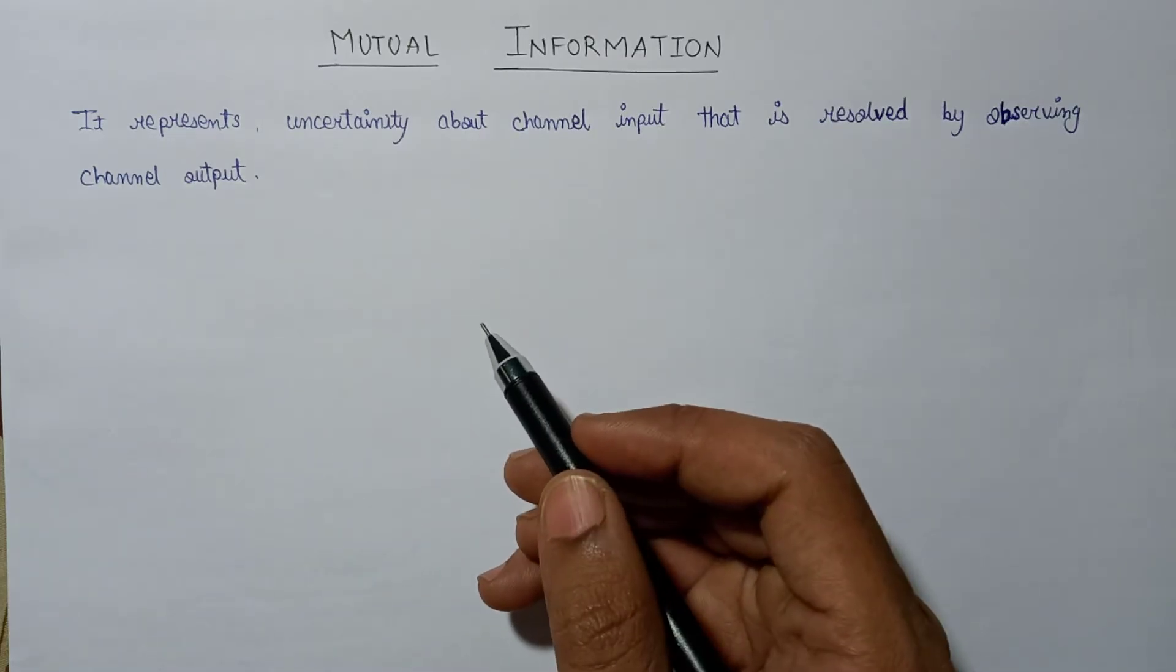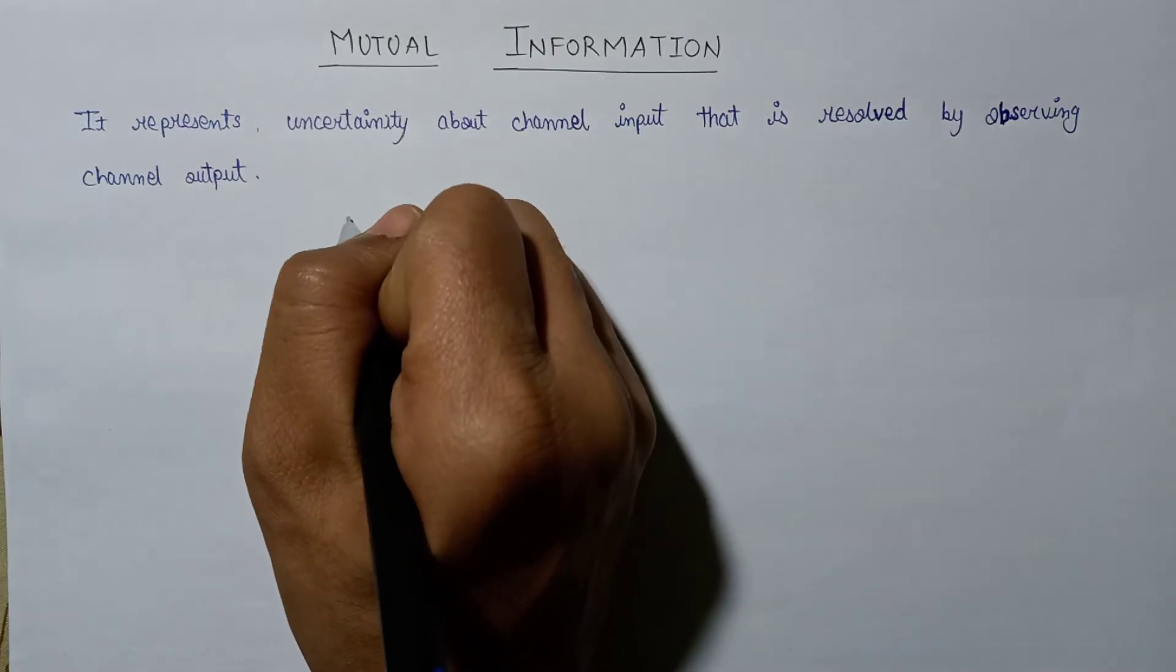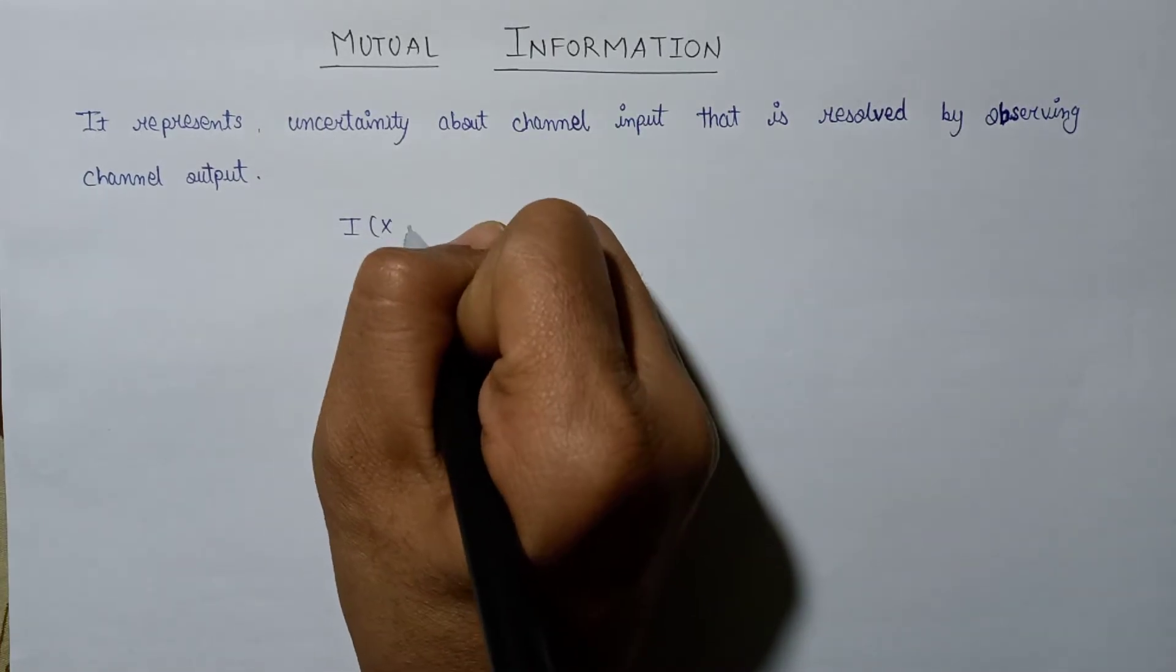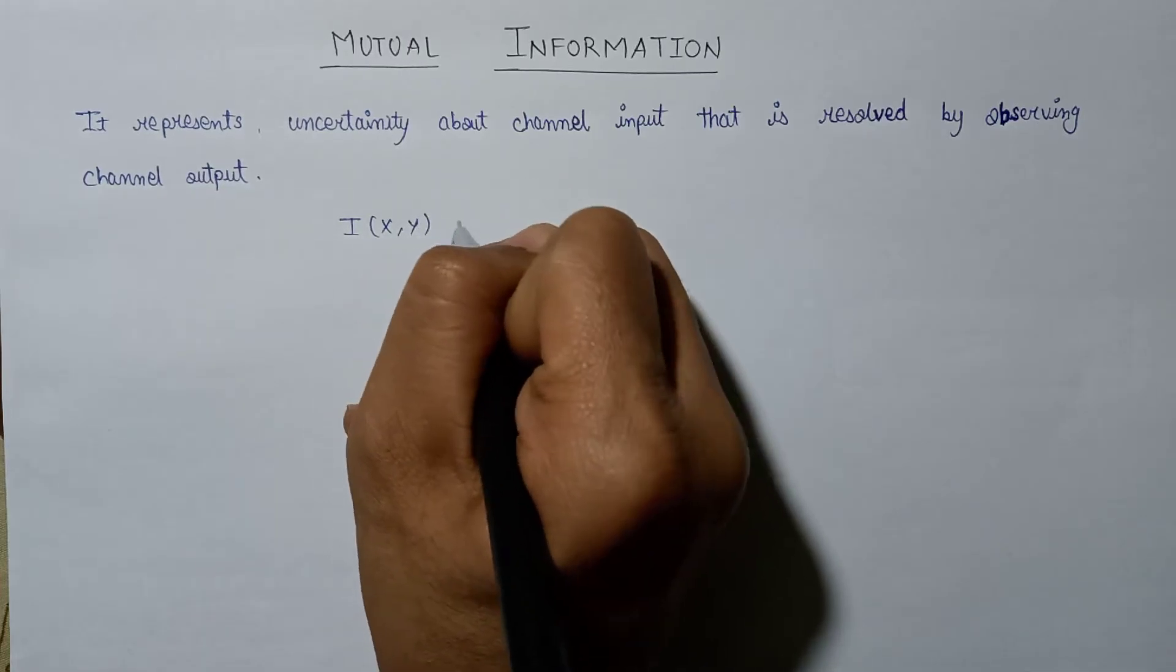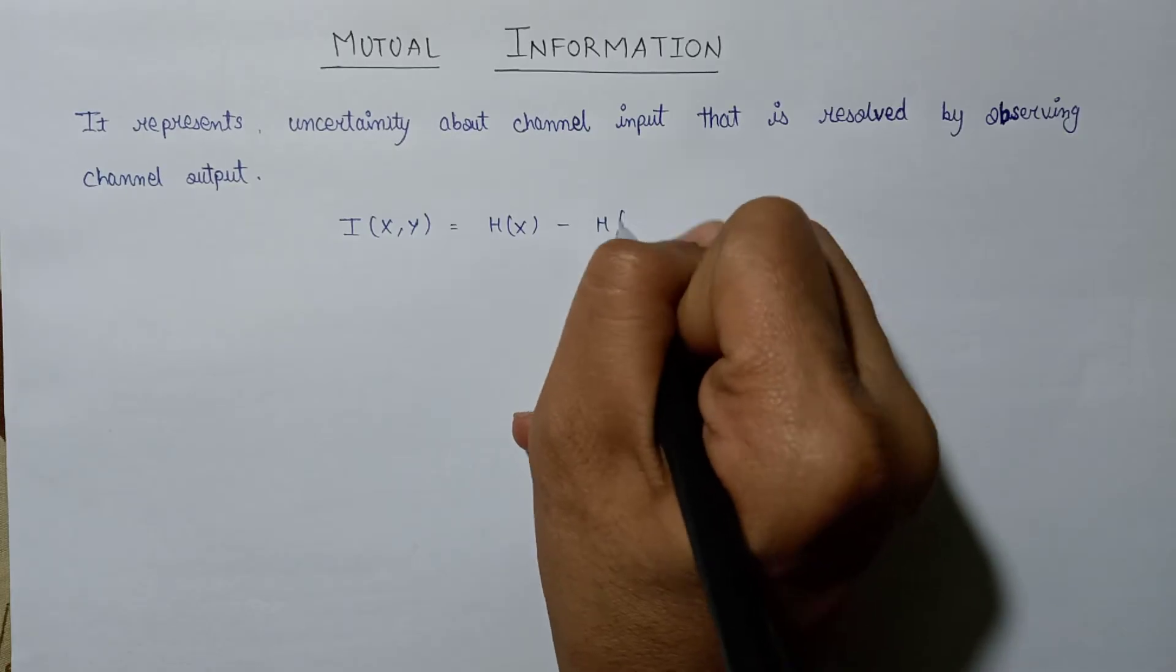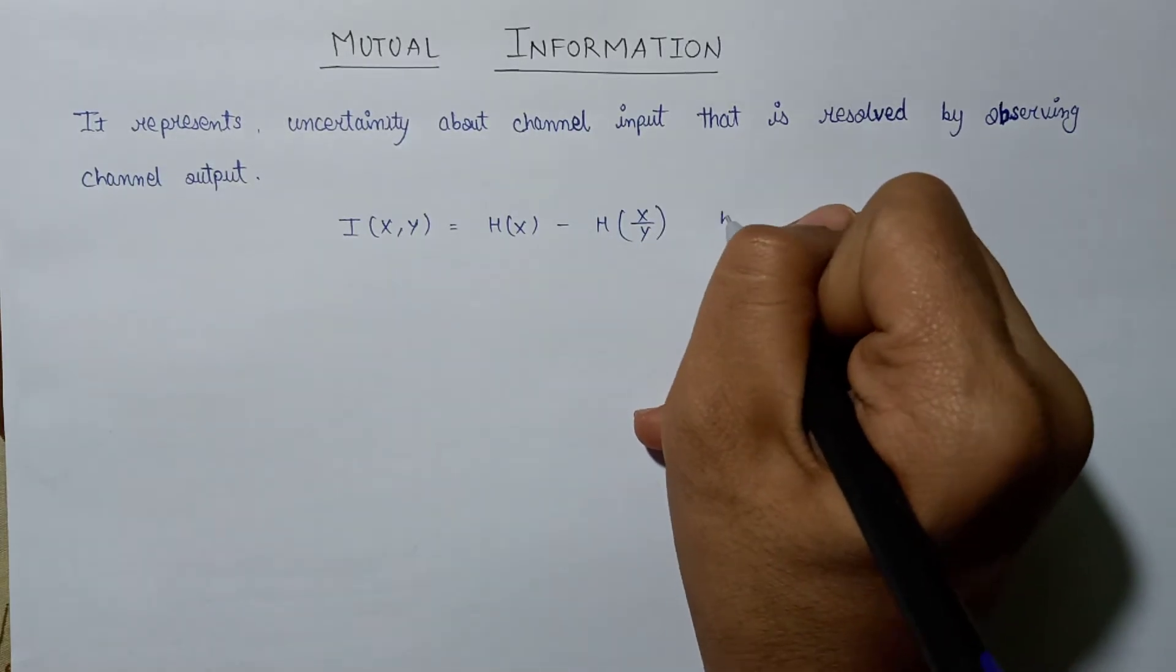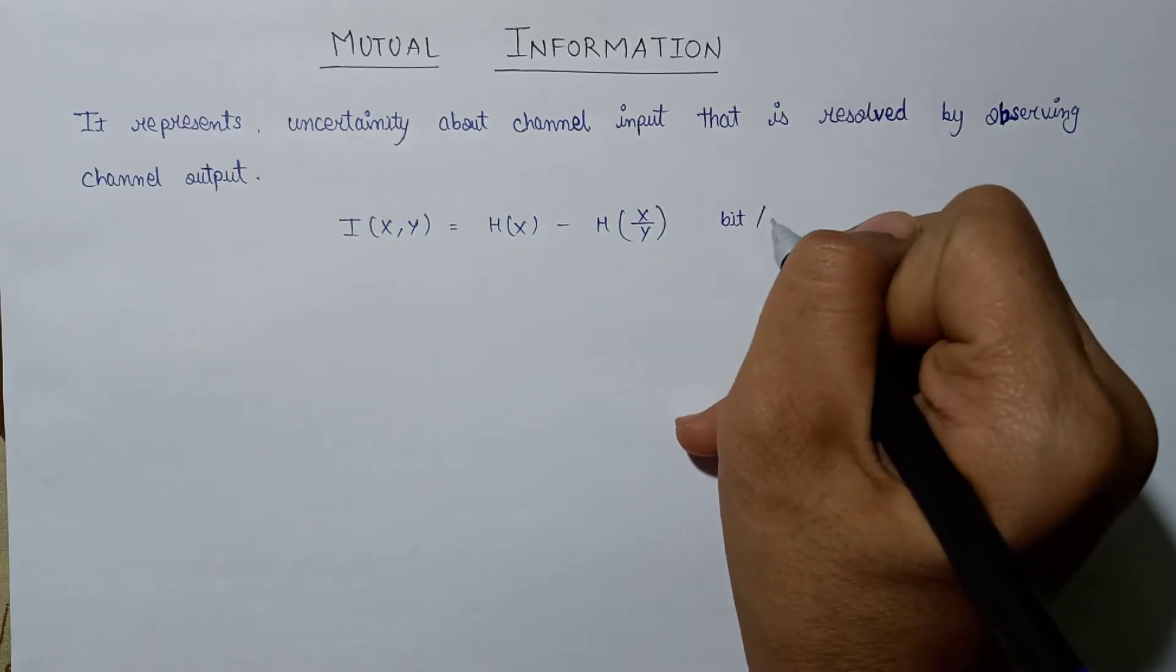If we talk about the mathematical expression for the mutual information, then it is given as I(x,y) equals H(x) minus H(x|y), and its unit is bits per symbol.